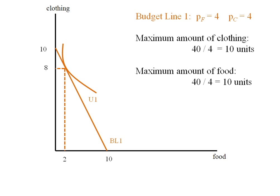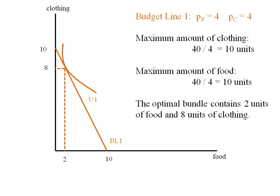Where the dashed lines intersect our clothing and food axes are at eight and two. So the optimal bundle is two units of food and eight units of clothing — that's where the indifference curve and our budget line are tangent.